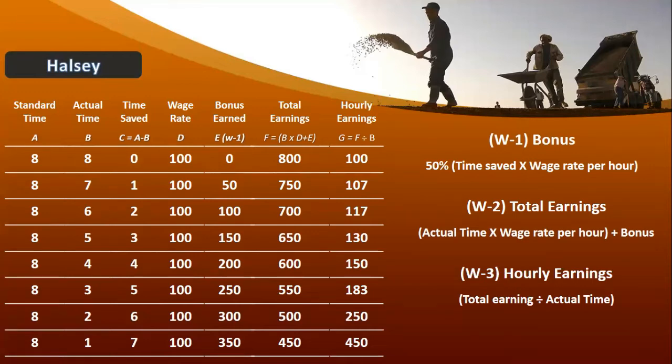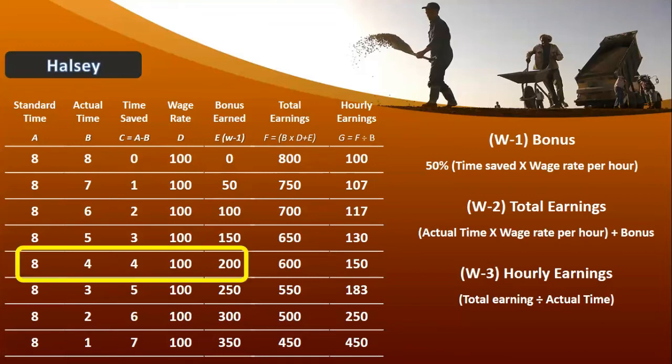Is condition mein humne previous question mein — jis ka icon mein aapke paas link aa raha hai — us mein humne baat ki thi ke agar Halsey ka actual time aur standard time equal hai, ya agar actual time standard time ka half hai, to aapke paas Halsey aur Rowan mein bonus dono equal honge. Yahan pe jab standard time 8 hours, actual time 4 hours hai, aapke paas jo bonus hai woh 200 rupees hai.